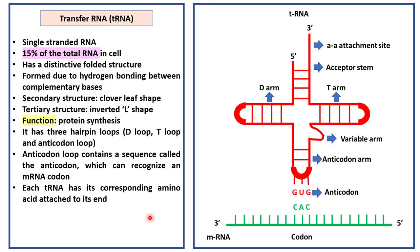Next is transfer RNA or tRNA. tRNA is a single-stranded RNA. It accounts for 15% of the total RNA in the cell. The tRNA molecule has a distinctive folded structure. The folded structure is formed due to hydrogen bonding between complementary bases. The secondary structure of tRNA looks like a clover leaf and tertiary structure is like an inverted L shape.